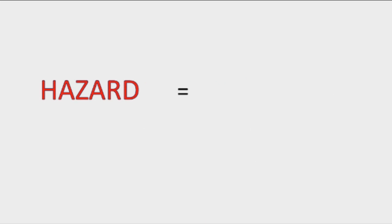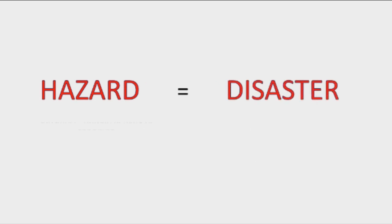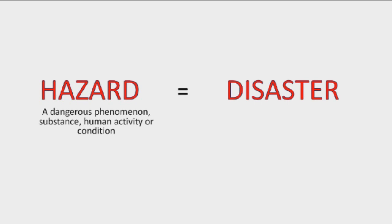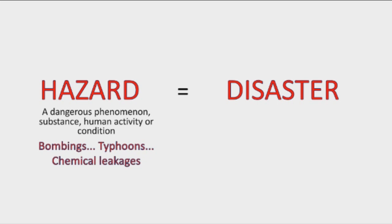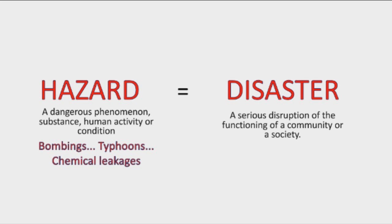A hazard is a dangerous phenomenon, substance, human activity, or condition — this may include bombings, typhoons, earthquakes, and other natural hazards or human-made events such as nuclear bombings and chemical leakages. A disaster is a serious disruption of the functioning of a community or society; if a community is in a disaster, it is in a state of emergency.